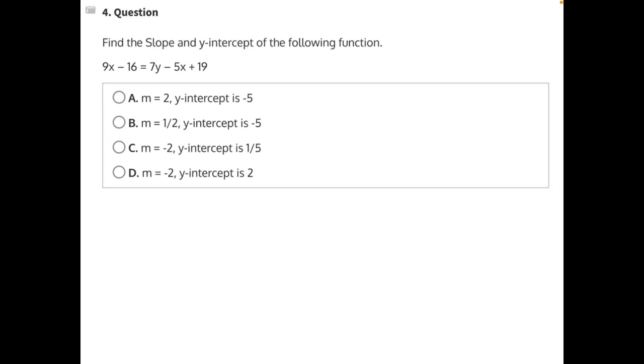Find the slope and y-intercept of the following function. In order to do this, we need to rewrite our expression to match slope-intercept form: y equals mx plus b, where m is equal to our slope, and b is equal to our y-intercept.